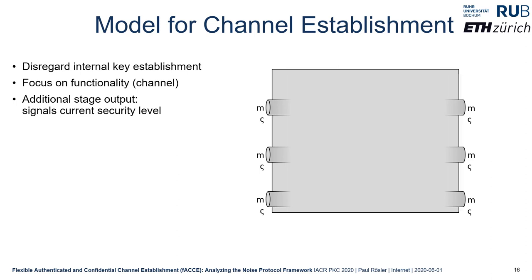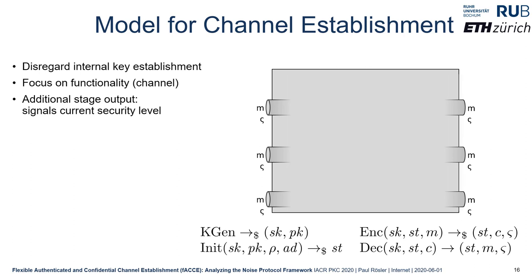In addition to messages encrypted to and decrypted from the channel, we also consider as functionality the security level output by the construction — signaling which security guarantees hold for each transmitted message. The construction itself declares which security it reaches for transmitted payload. From this information, we define a simple and clear syntax for channel establishment consisting of four algorithms.